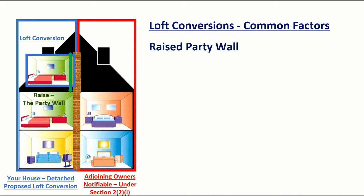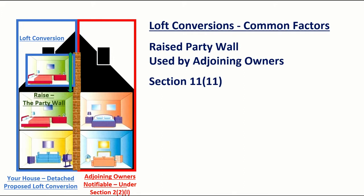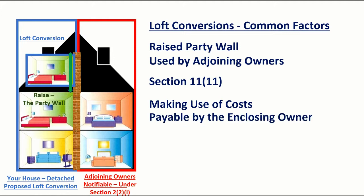Once the party wall has been raised and the neighbor makes use of it, section 11 of the Act applies. Making use means that the neighbor has to pay a contribution towards the cost of construction of that wall. The section 11 contribution costs are made at the time of making use, and the costs are worked out at the time when the wall is made use of.